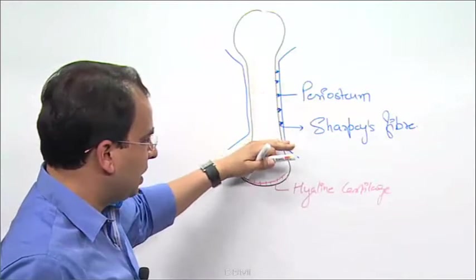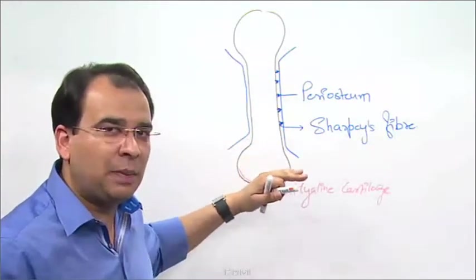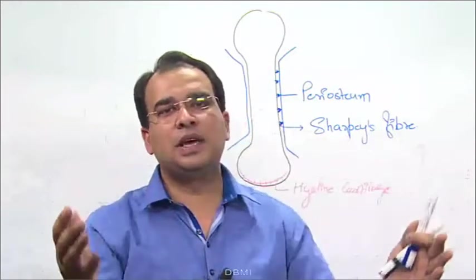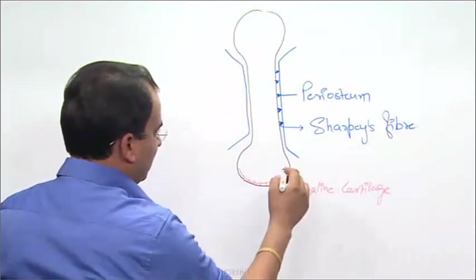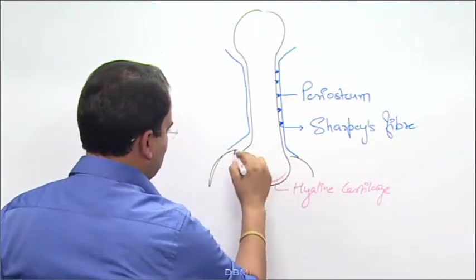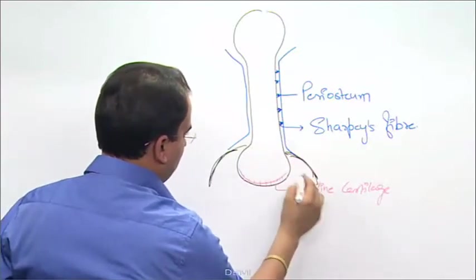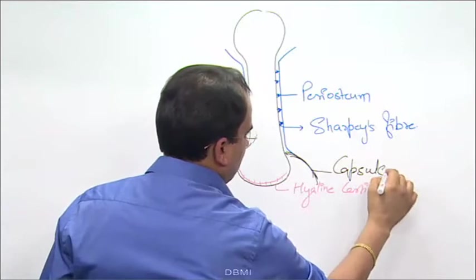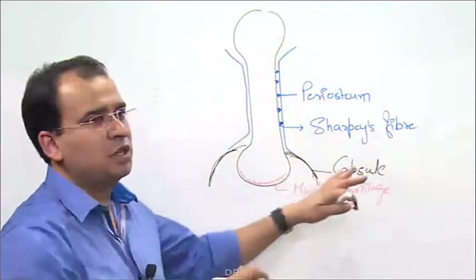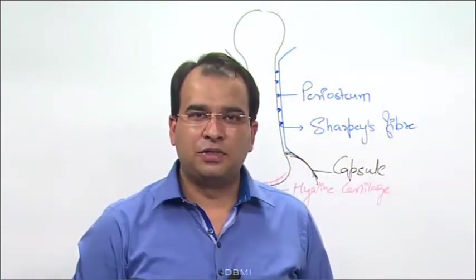So what will it do? The periosteum in this part close to the articular part, it goes and merges with the capsule of the joint. So if I imagine, if this is the capsule of the joint over here, your periosteum is merging with the capsule of the joint.